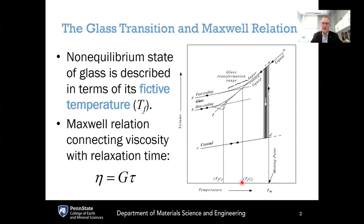The fictive temperature is an additional order parameter used to help define the non-equilibrium thermodynamic state of the glass. For a fast-cooled glass, the system has less time to stay in its metastable supercooled liquid equilibrium, and therefore falls out of equilibrium at a higher fictive temperature TF2. If you cool the system more slowly, it stays in that metastable equilibrium a bit longer, falling out at a lower fictive temperature TF1. So fictive temperature is the most convenient way to capture the thermal history dependence of glass properties.